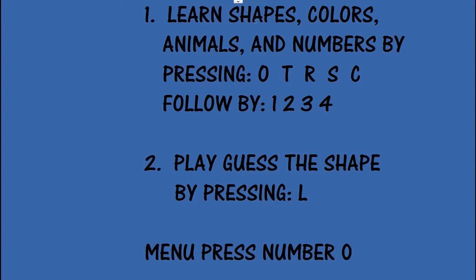The first one is learn the shapes by colors, animals, and numbers by pressing the letter O, T, R, S, and C, and the numbers 1, 2, 3, and 4.